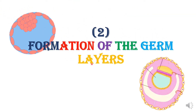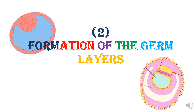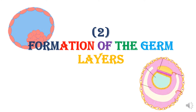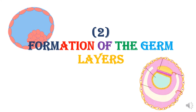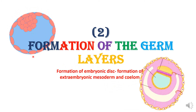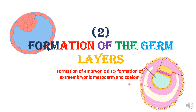In the first part, we have seen till the formation of the blastocyst. Today we are going to see the rest. The blastocyst not only gives rise to the tissues or organs of the embryo, but also to a number of structures which help the embryo to acquire nutrition. Today we will be learning about the formation of the embryonic disc and the formation of extraembryonic mesoderm and coelom.